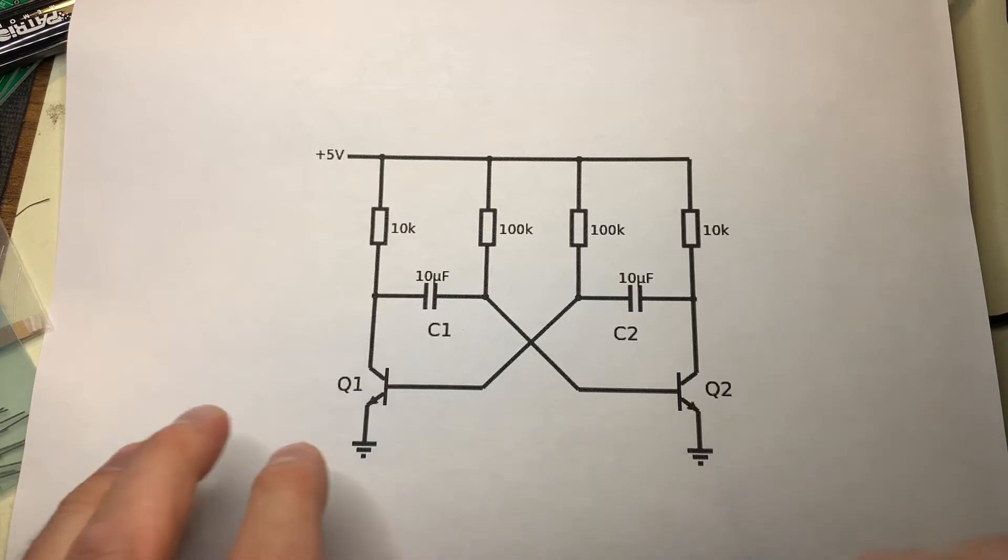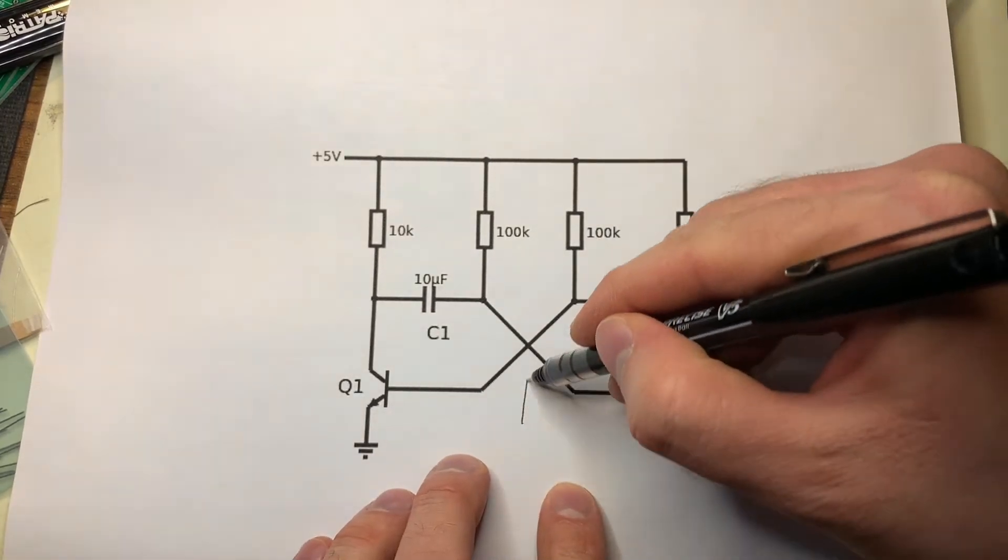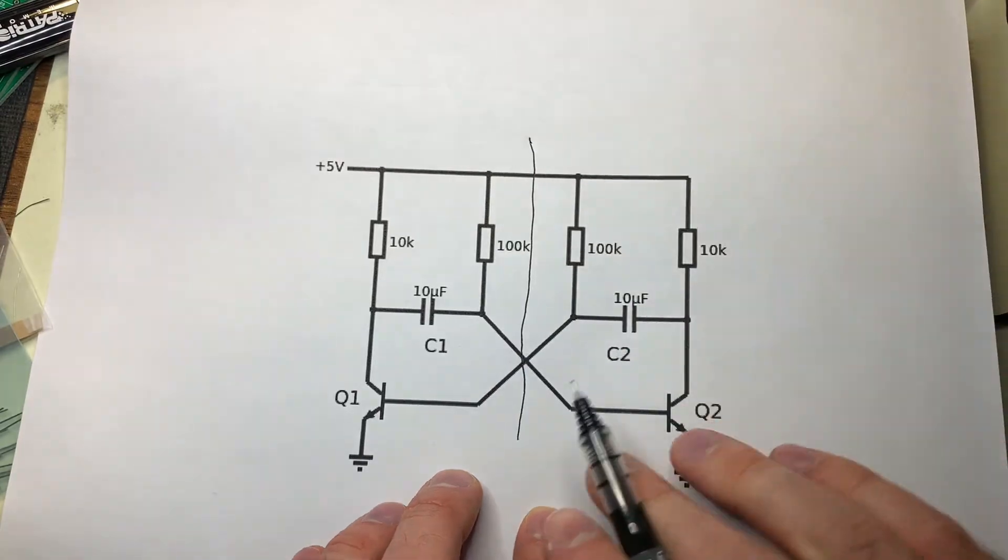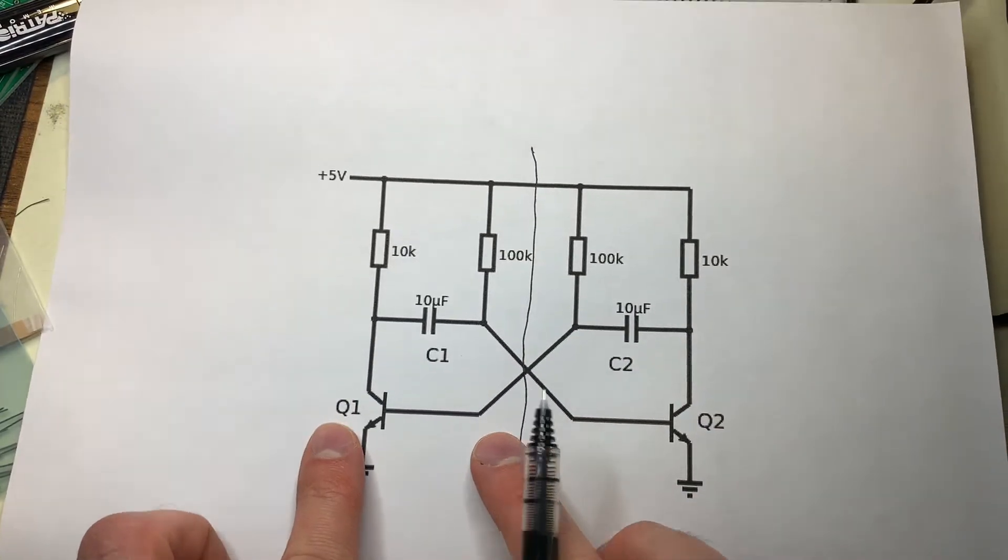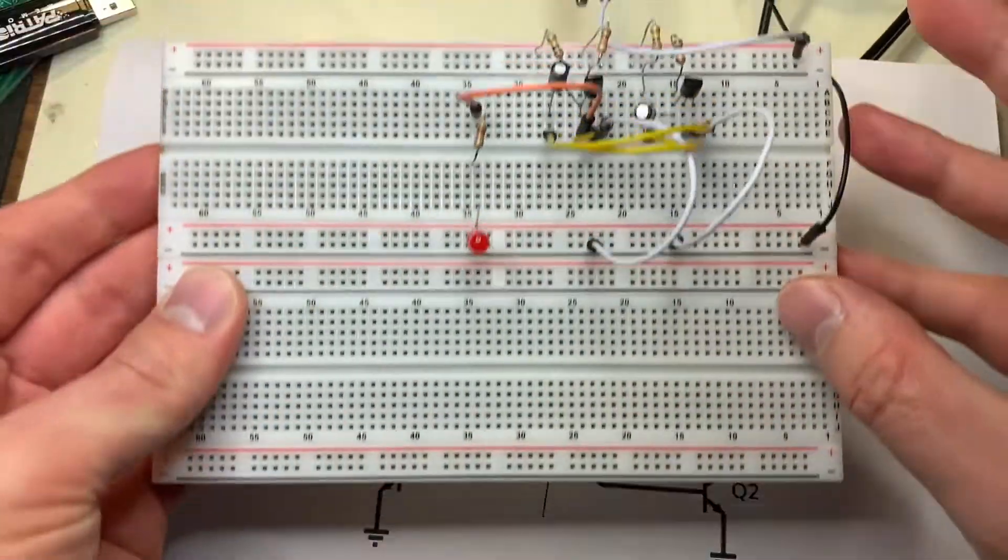If you pay attention to the layout of the circuit, you can see that the circuit is just like a mirror image. So everything that's over here is just flipped over this way and copied over here.